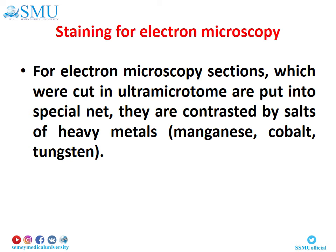Staining for electron microscopy: for electron microscopy, sections which are cut in the ultramicrotome are placed into a special net. They are contrasted by salts of heavy metals – cobalt, lead, and manganese. After that, they are viewed in the microscope and photographed. Such microphotographs serve as objects of study together with histological preparations.